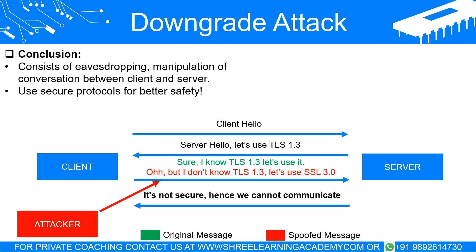Conclusion: downgrade attacks are a potent cybersecurity threat that leverage the balance between system compatibility and security. By manipulating the negotiation process between clients and servers, attackers can force them to use less secure encryption methods, making it easier to eavesdrop and manipulate conversations. Understanding this form of attack, the contexts in which it thrives, and how to mitigate its risks are essential for maintaining secure digital systems. Security is an ongoing process requiring us to continuously learn, adapt, and enhance our defenses. By focusing on proactive steps such as disabling backward compatibility where possible, adopting secure protocols, and ensuring regular updates, we can considerably lower the risks posed by downgrade attacks.